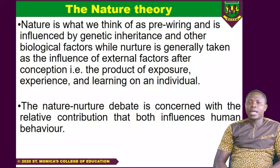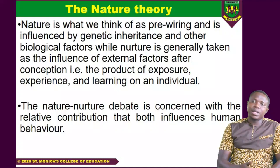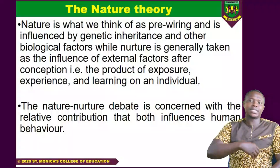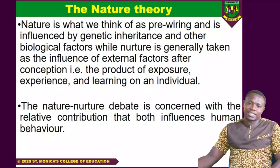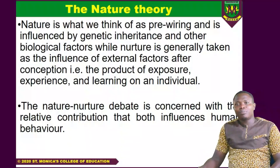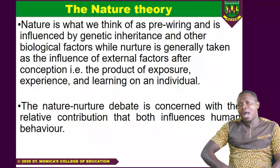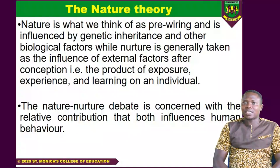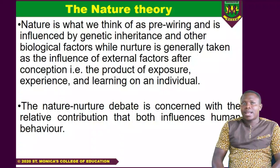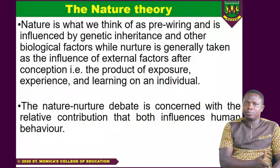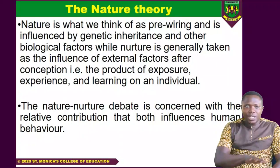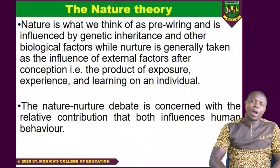This brings us to the next theory — the nature theory. For the nature theory, they believe that there are certain things that you are born with which cannot be changed. It is inherent, it is genetic. So if your parents behave in a certain manner and they give birth to you and you pick those genes from them, you are likely to exhibit the same thing. The behaviors that human beings exhibit are as a result of our genetic components within us. Nature is what we think of as pre-wiring, and is influenced by genetic inheritance and other biological factors. The nature theorists are often referred to as empiricists.